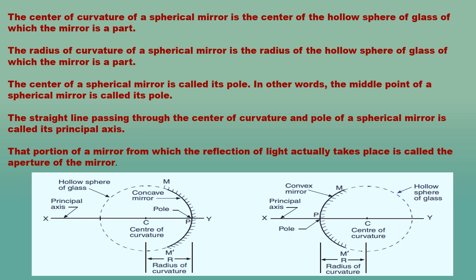That portion of a mirror from which the reflection of light actually takes place is called the aperture of the mirror. The aperture of a spherical mirror is represented by the diameter of its reflecting surface.